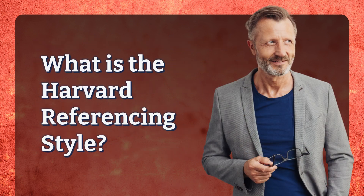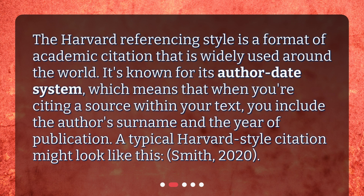What is the Harvard referencing style? The Harvard referencing style is a format of academic citation that is widely used around the world. It's known for its author-date system, which means that when you're citing a source within your text, you include the author's surname and the year of publication. A typical Harvard-style citation might look like this: Smith, 2020.